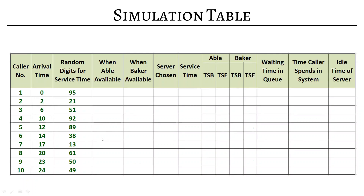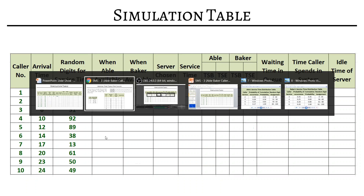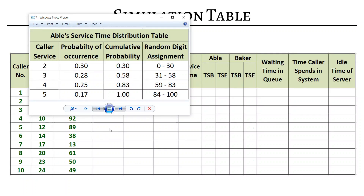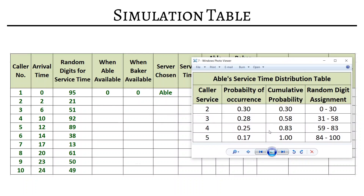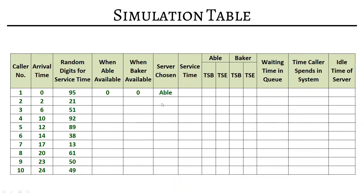For the first caller at time 0, both Abel and Baker are available. Since both are idle, we choose Abel per the problem rules. The random digit is 95, which in Abel's table belongs to service time 5. Service begins at 0 and ends at 5. Baker is doing nothing, so dash-dash. The customer waiting time is 0, and caller time in system is 5. Was Abel idle? No — it started immediately at 0.